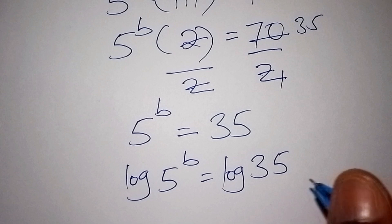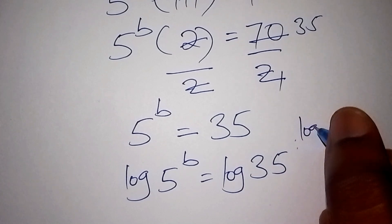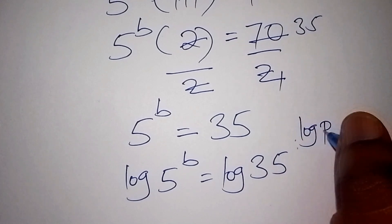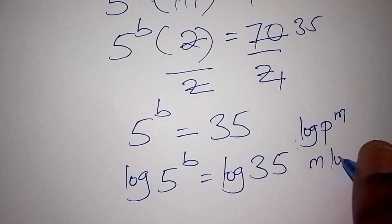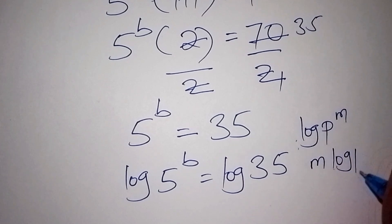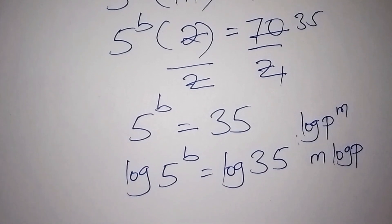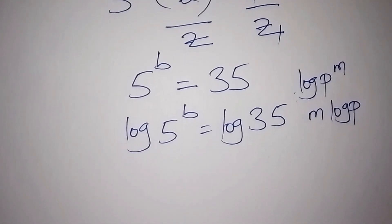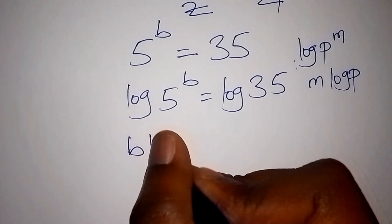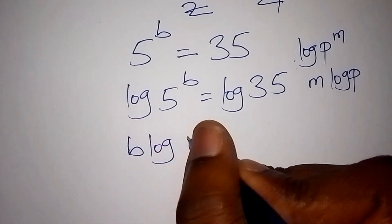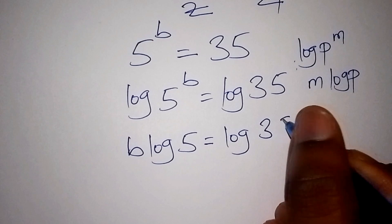We all know that when we have the log of b to the power of m, this can also be written as m times the log of b. So that means the log of 5 to the power of b can also be written as b times the log of 5. Let us now put it down: b times the log of 5 is equals to the log of 35.